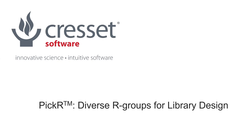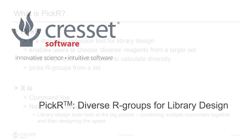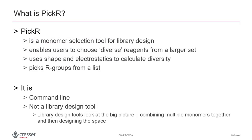We recently released a new application called Pickr, which I will introduce in the following slides. Pickr is a command line monomer selection tool for library design. Given a reagent collection, Pickr will efficiently select the best subset of monomers based on electrostatic and shape diversity in 3D.